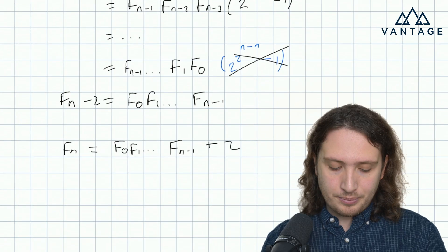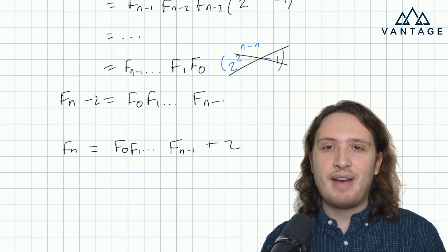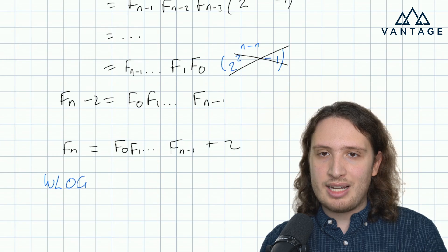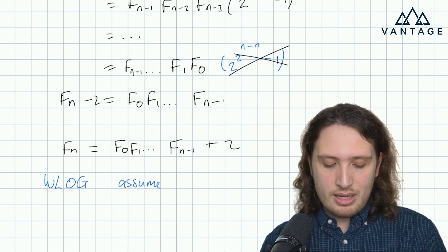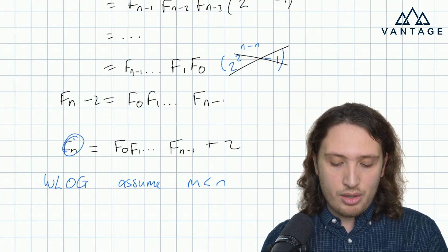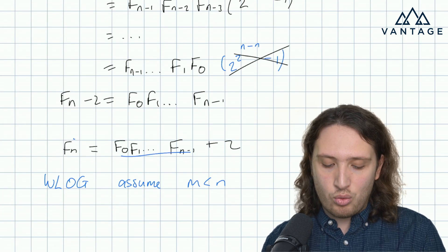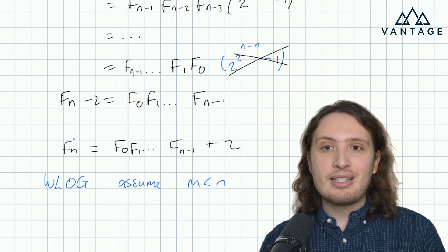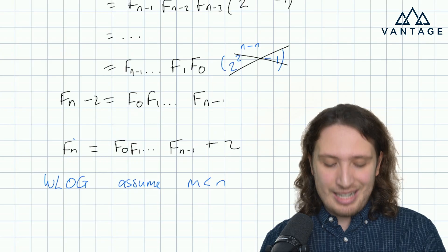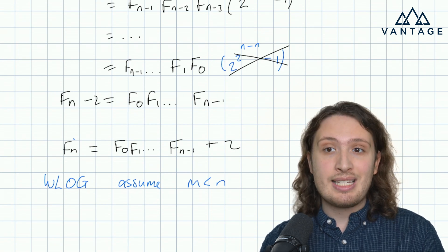Reminding ourselves what we actually wanted to prove: we want to show that fn and fm share no common factors. I've got fn in terms of all the smaller f's. Without loss of generality, let's assume m is smaller than n. If m is smaller, then fm is going to appear somewhere in that product, since the product contains all the earlier f's. If instead n were smaller than m, I would just use this factorisation on fm and swap the labels — so I can safely restrict to the case where m is less than n.